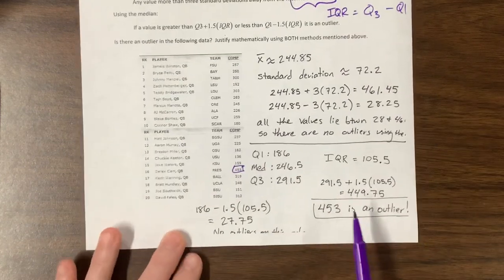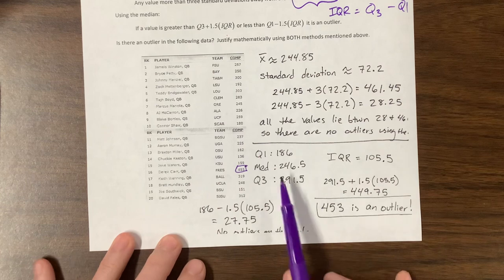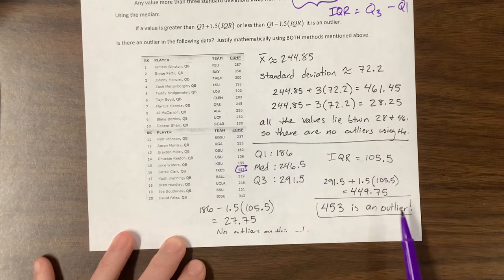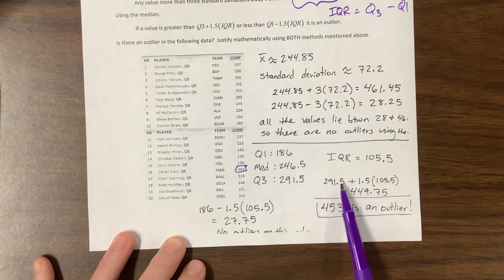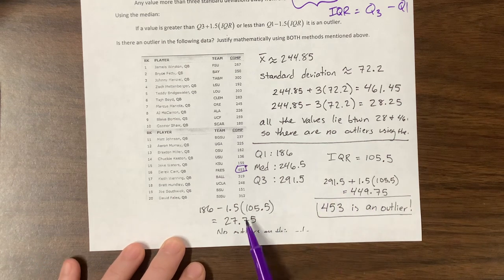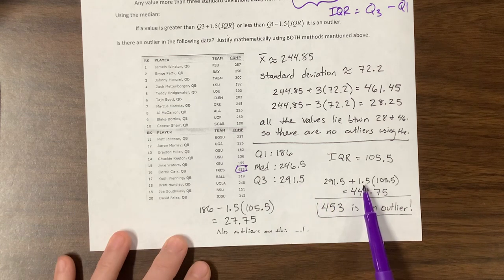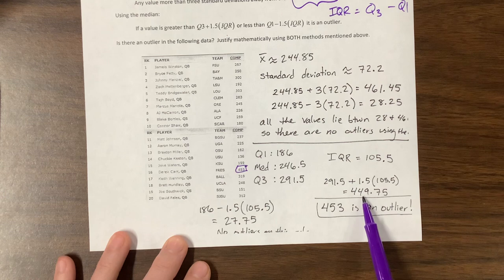The other option, we took all this data, put it in our calculator, found the Q1, the median, the Q3, found the IQR, which is this minus this, and then we did the Q3. Well, so we didn't think we'd have any, no, I did both. Sorry. I took the Q3, here's the Q3, and then I added 1.5 times the IQR and got this number.